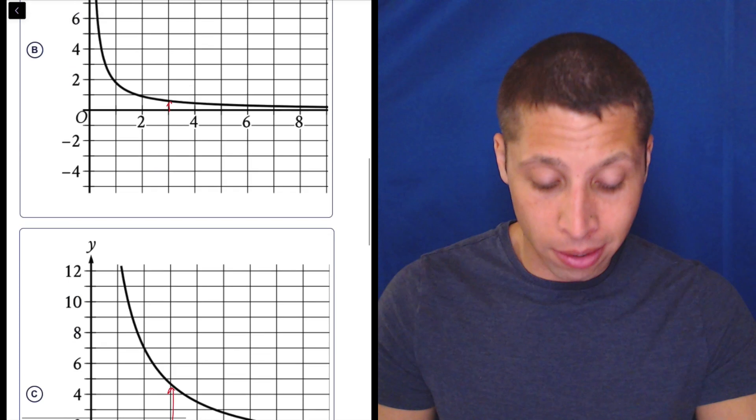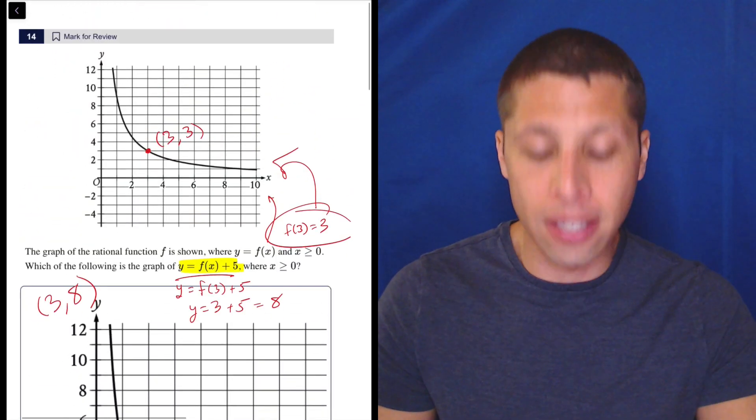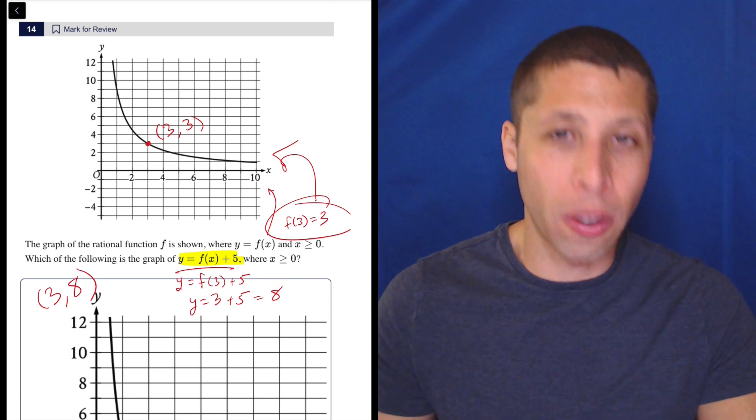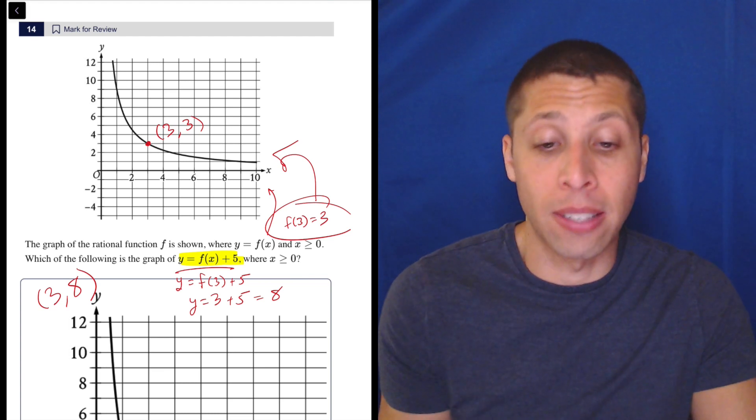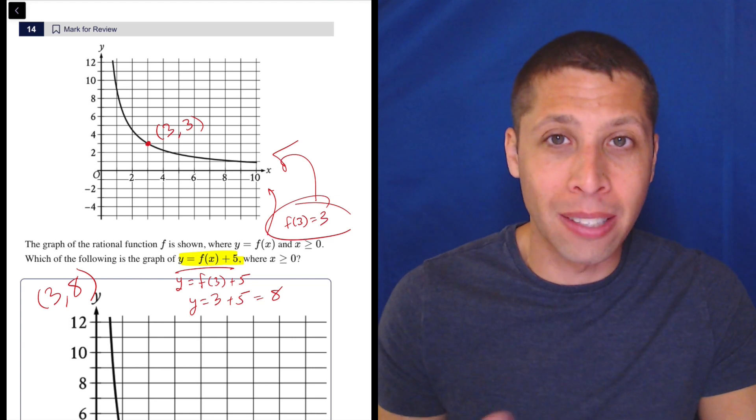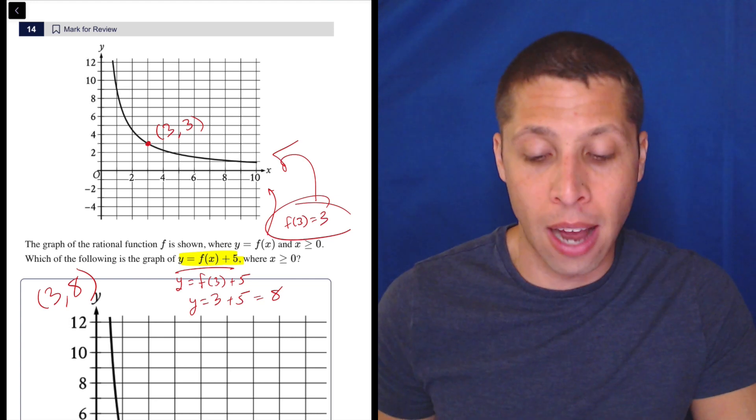We do need to understand how translations work. It is very common on the SAT that they ask about it. But in a lot of cases, it's not really worth it for us to put it in Desmos because we don't have, in this case, the actual original graph's equation. So we wouldn't really be able to see the shift other than to understand it just one point at a time.